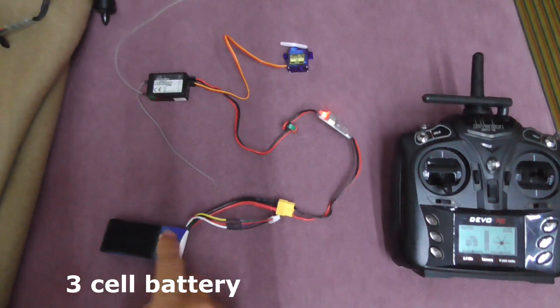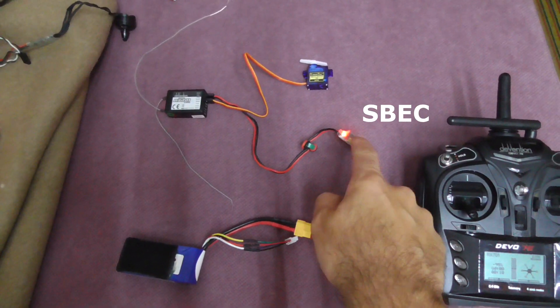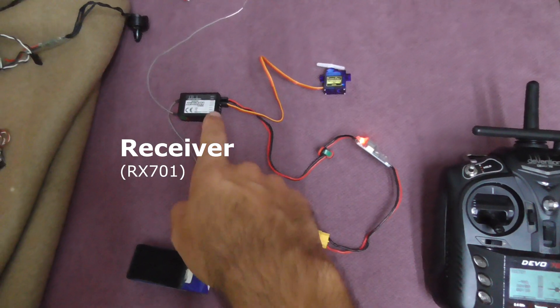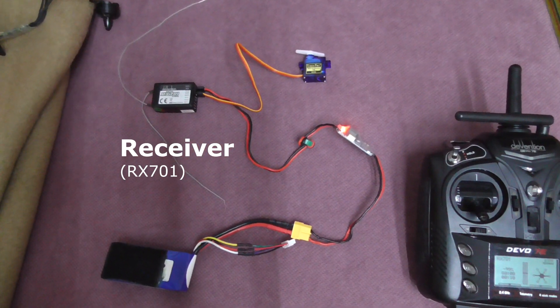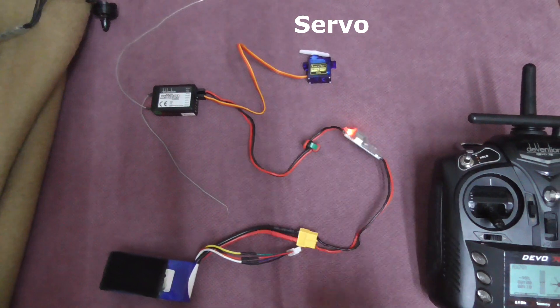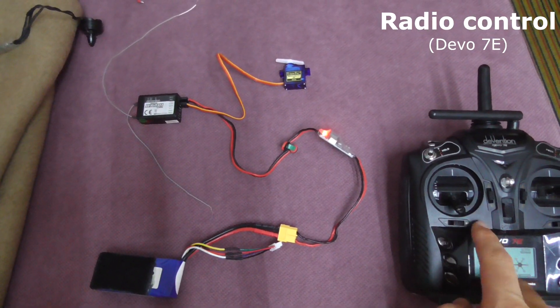So here's a 3-cell battery, an S-BEC small transformer that's the receiver RX701, and that's a small servo, and that's the radio.